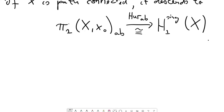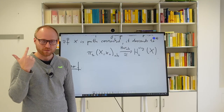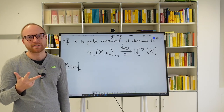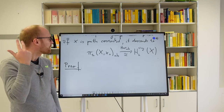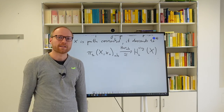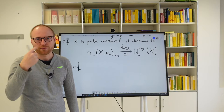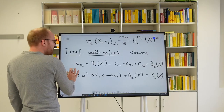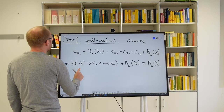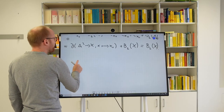Various things need to be addressed here. We need to address the well-definedness of the map, whether it is a group homomorphism, the descent to the abelianization assuming X is path-connected, and finally injectivity and surjectivity for the isomorphism statement. So it is like a task list of five points to work through.